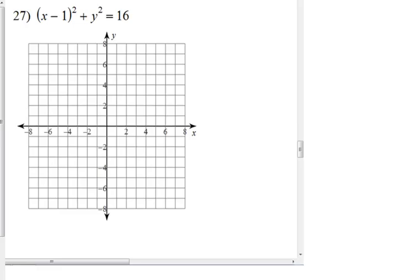Number 27 is in standard form. We can very easily tell what the center and the radius are. So the center here is at 1, 0, and the radius is 4.